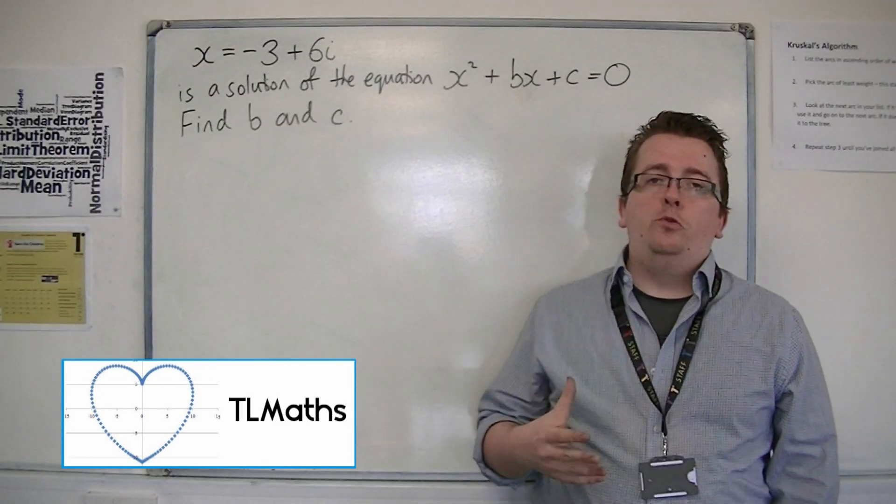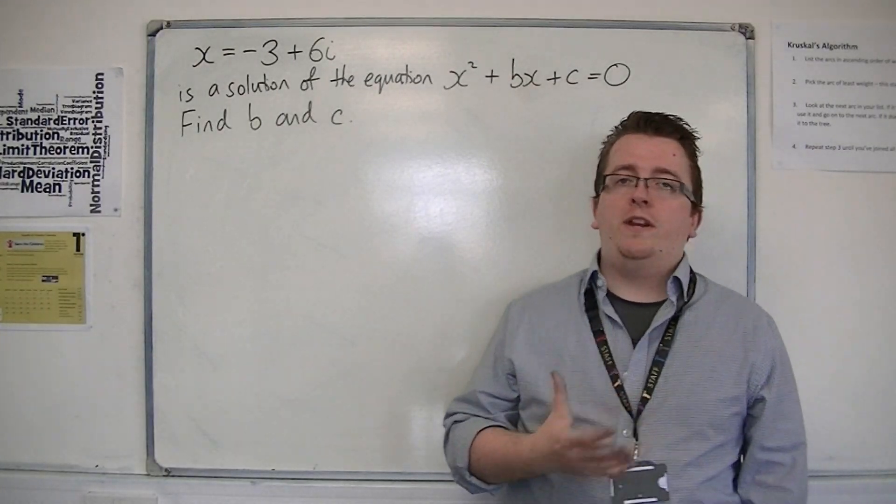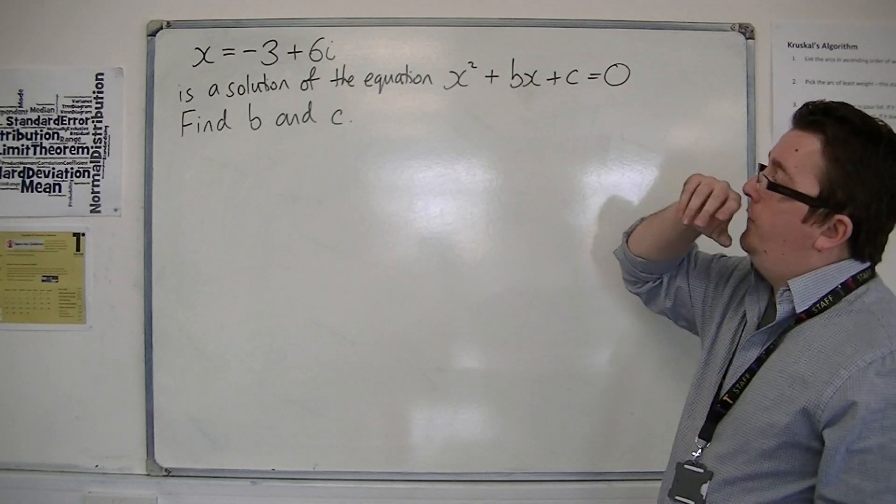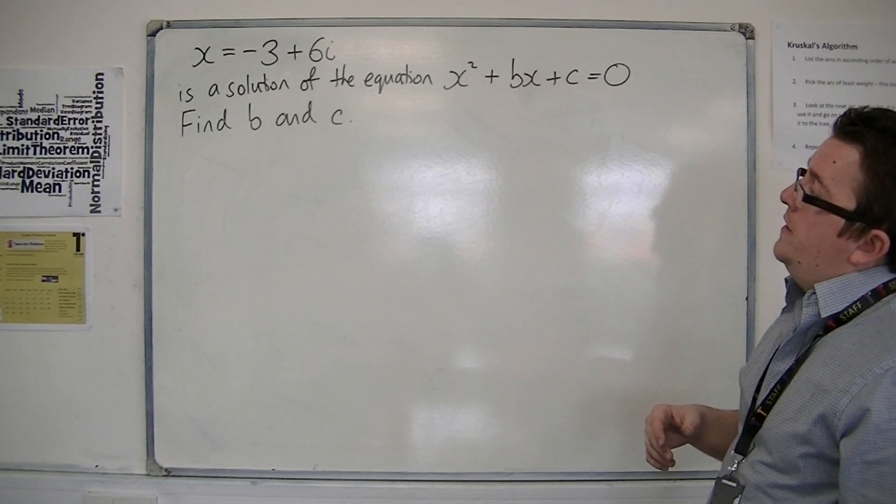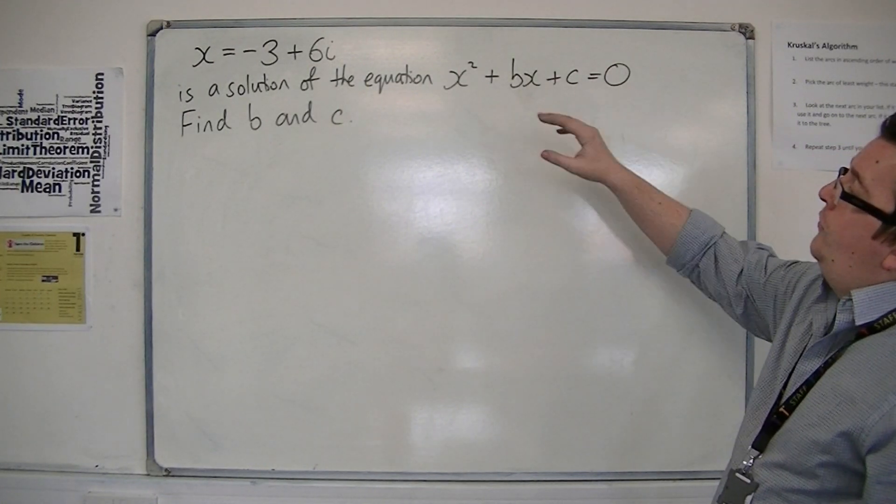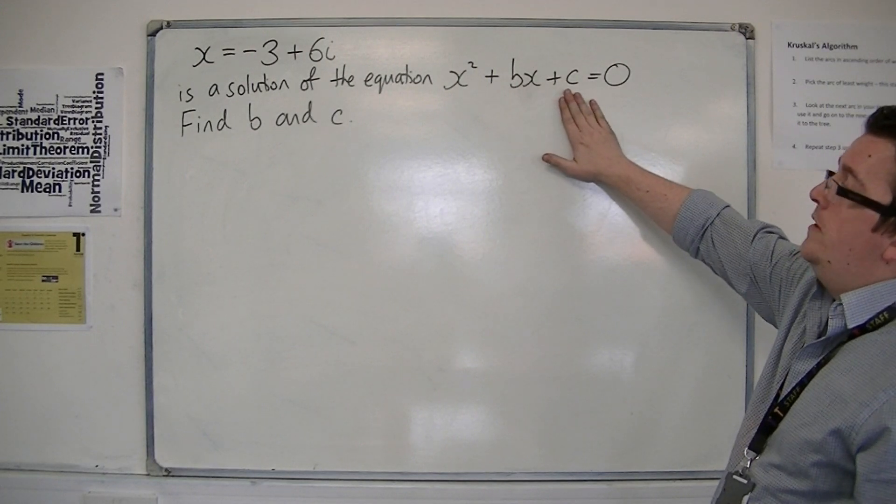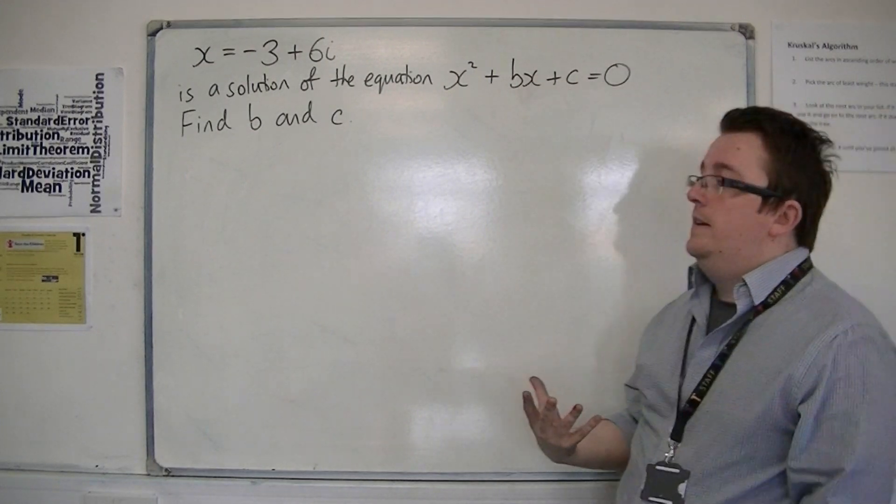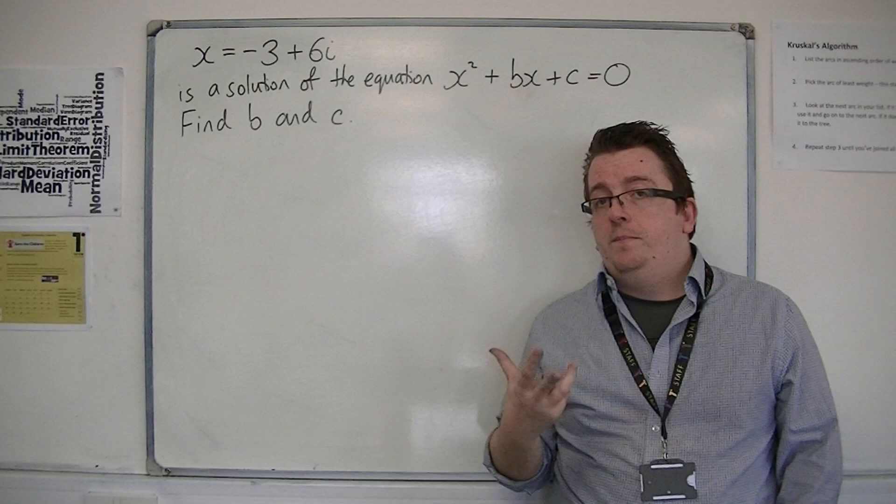Let's say we've been told that one of the roots of a quadratic equation is x equals minus 3 plus 6i, and the equation in question is x squared plus bx plus c equals 0. We're asked to find b and c.